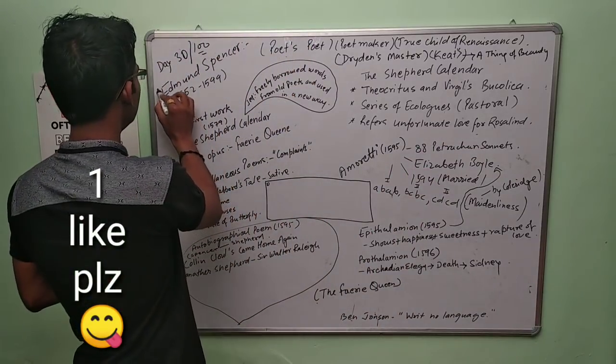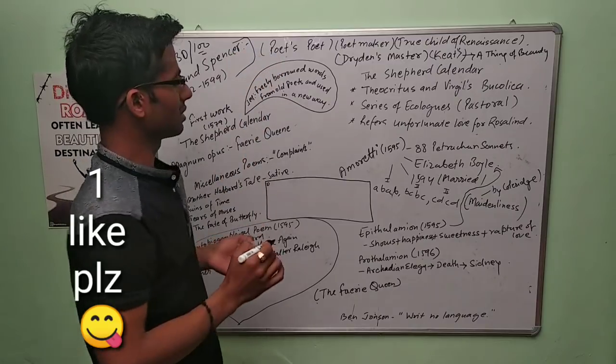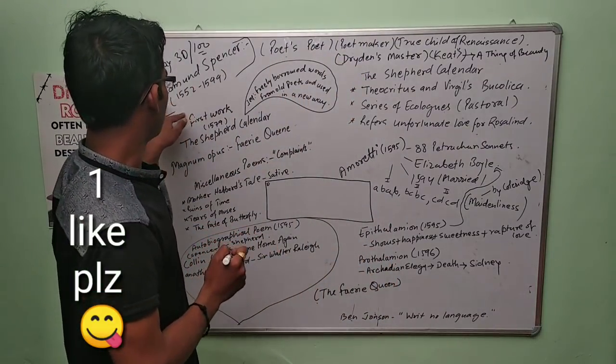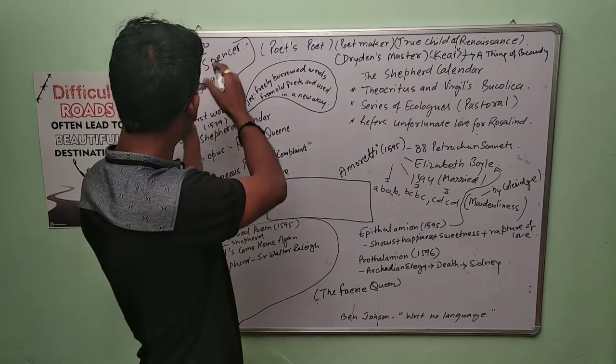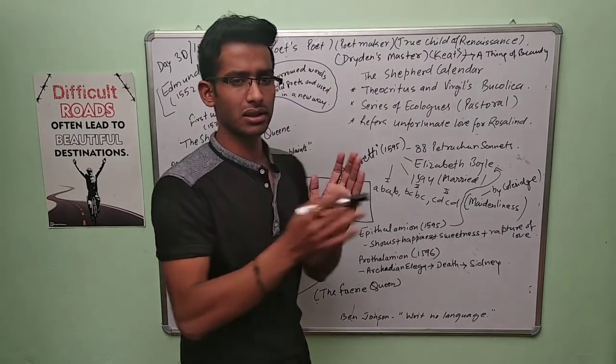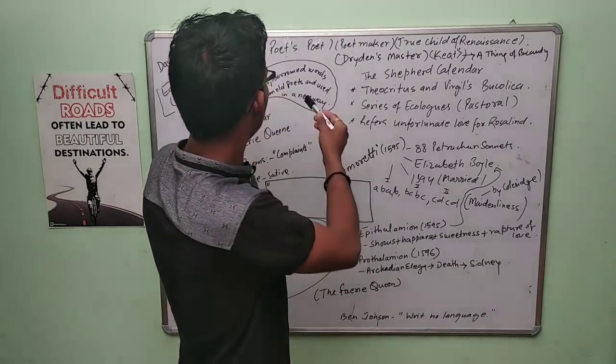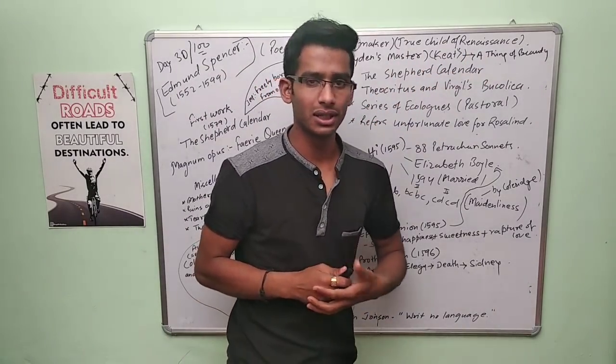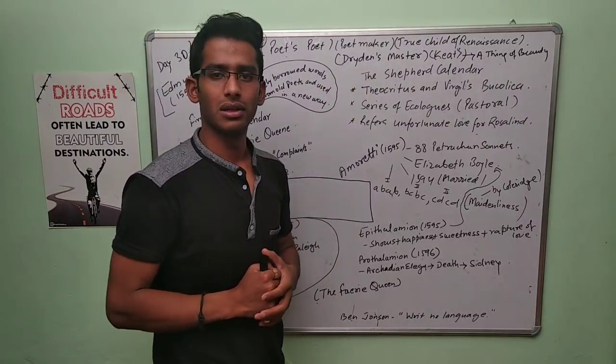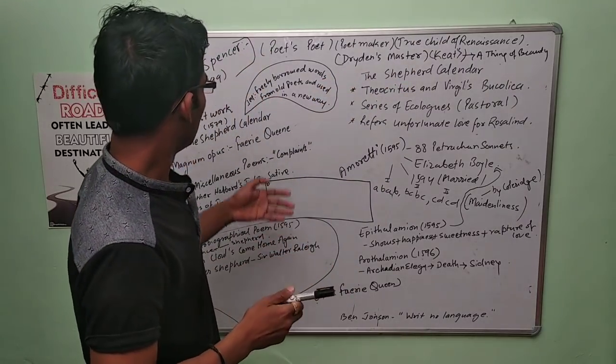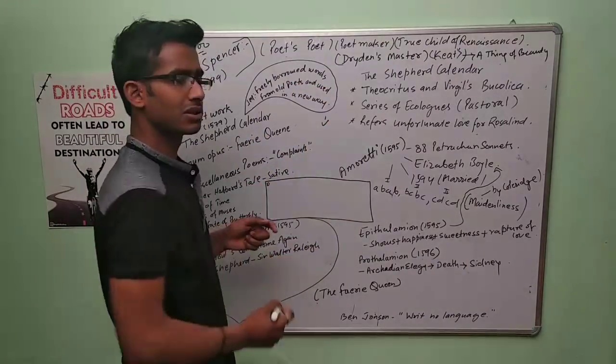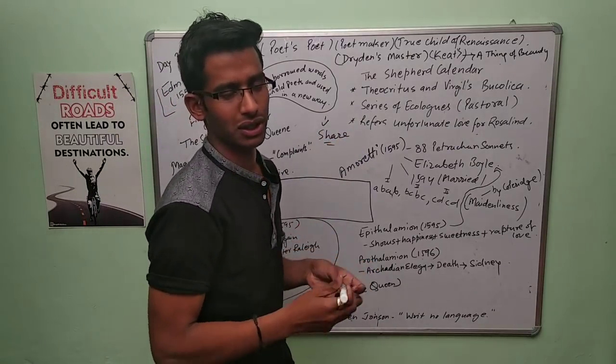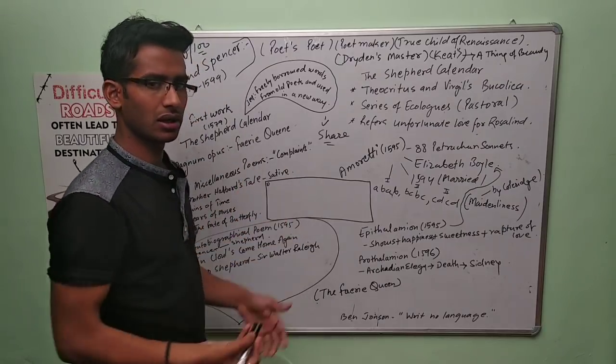Today, Edmund Spenser. This is a subpart of Shakespeare, and this is the third part on Edmund Spenser. If you are studying Edmund Spenser, you can make keywords. These phrases or words can be your keywords: true child of Renaissance and Dryden's master. Please don't forget to like and share because it helps us to grow our channel and motivates me to go in depth.